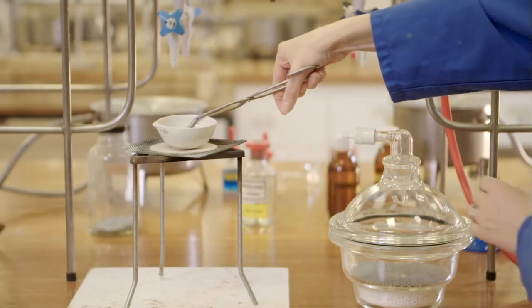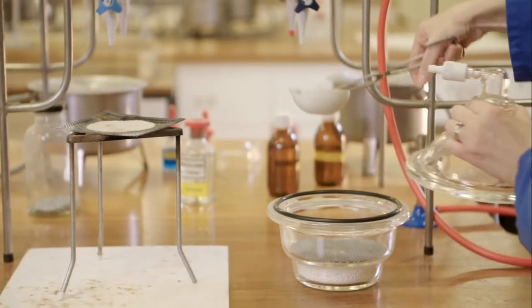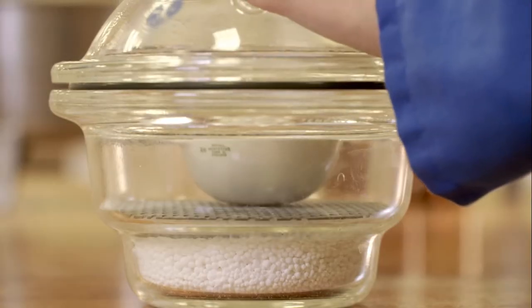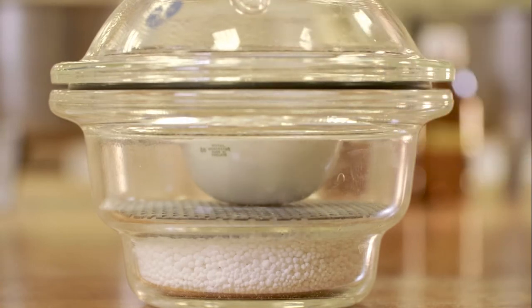The evaporating dish is then cooled in a desiccator for 5 minutes. The desiccator is used to prevent the cobalt chloride absorbing moisture from the atmosphere.